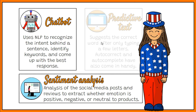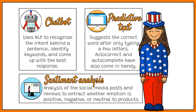Predictive Text, Autocorrect, and Autocomplete have become so accurate in word processing programs like Microsoft Word and Google Docs. You often only have to type a few letters of a word, and the texting app will suggest the correct one for you.